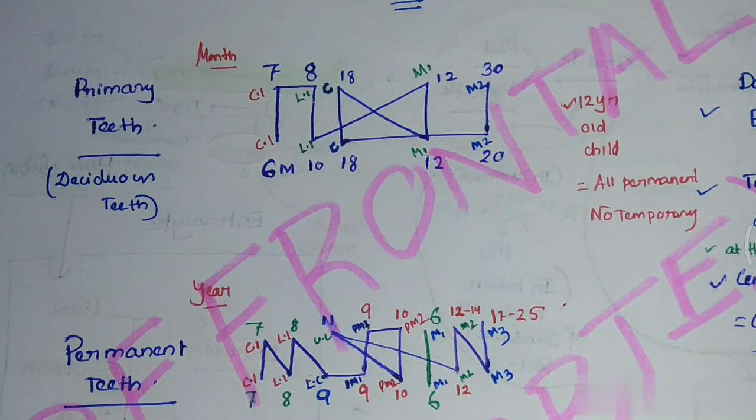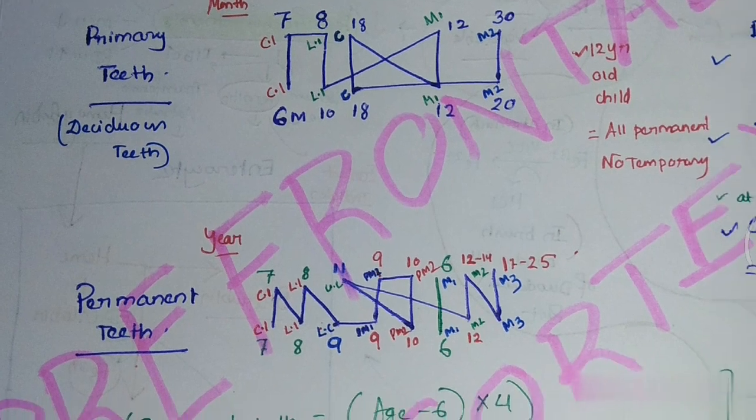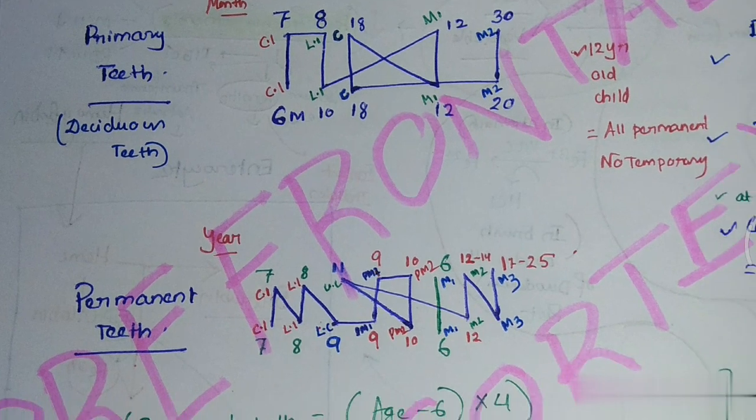There are two types of teeth in humans. First is primary or deciduous teeth. Second is the permanent teeth. Primary teeth include two central incisors, two lateral incisors, two canines, and four molars — a total of 20 teeth.